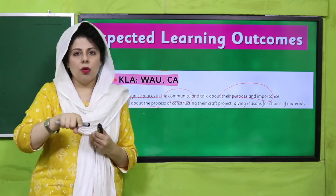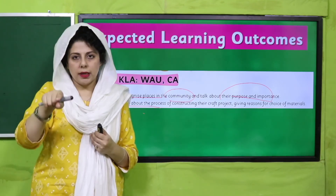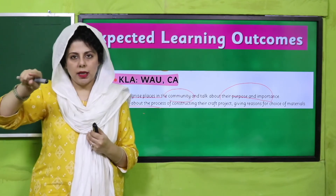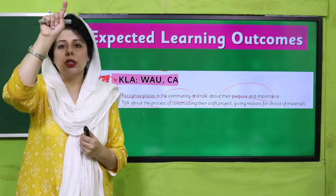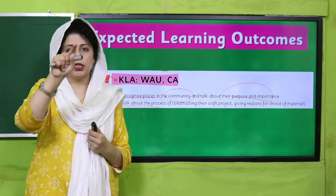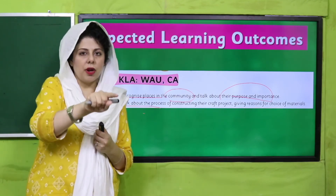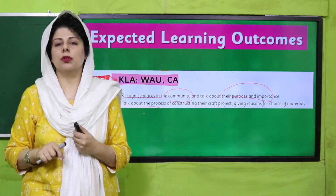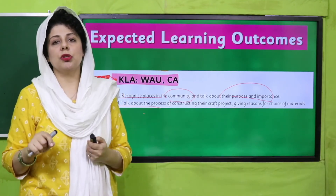Aur kis kis ko 'H' ka face yaad hai? Jaldi se hawa mein draw karke dikhaiye! Down, and then another line, and then a line in the center — very very good! Aur kis kis ko small letter ka yaad hai? Down, up and round and stop — very good! Teachers, ye lijiye, bacho ne sound bhi repeat karli, letter ka face bhi revise kara liya, badhiya si discussion bhi kar li.